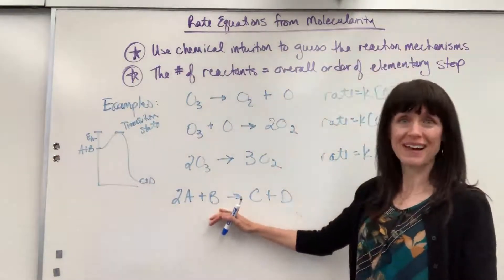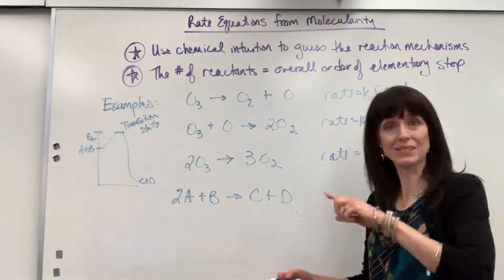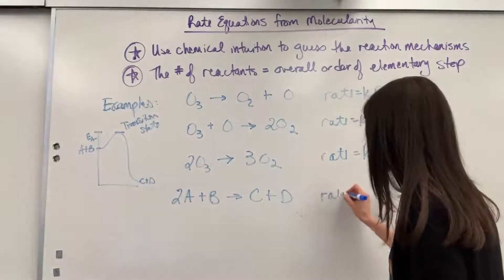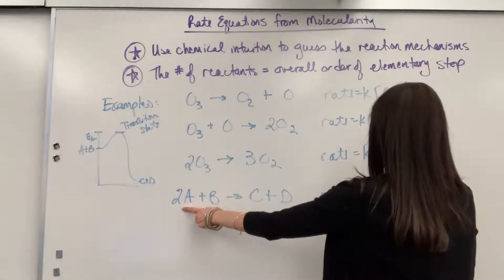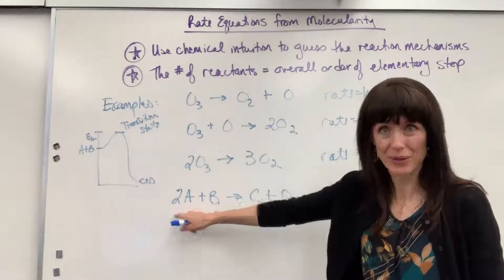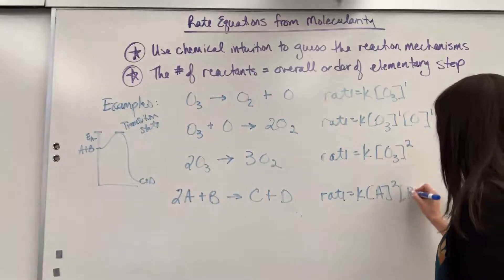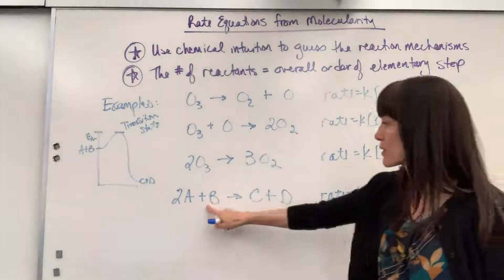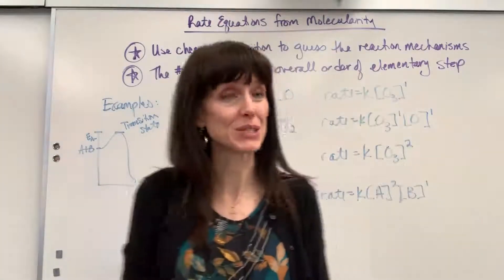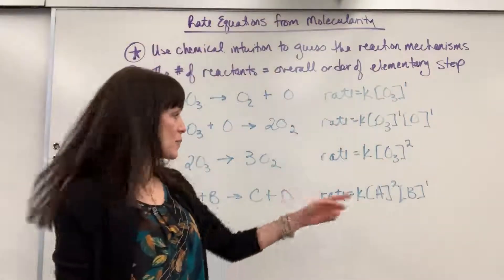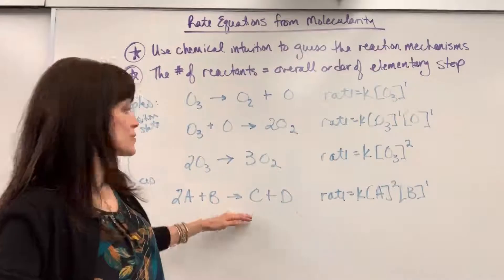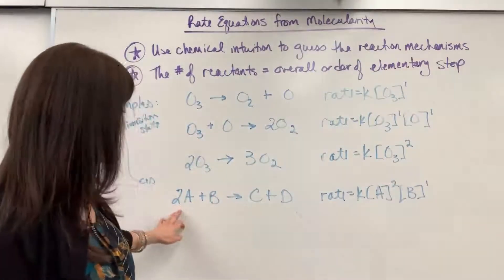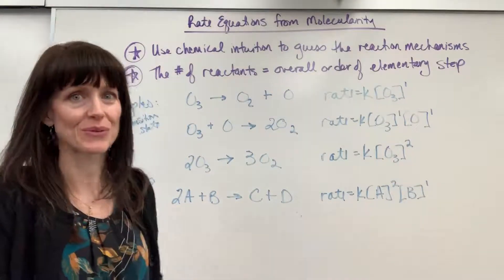Okay, let's go ahead and write down our reactants with the coefficient as the exponent, the order. We will have rate equals K times the concentration of A to the second order, because of that coefficient, times the concentration of B to the first order, because its coefficient is understood to be a one. Now, if we add this up, we have two plus one is three. That's a third order reaction because it's termolecular. I have one, two, three total reactants.